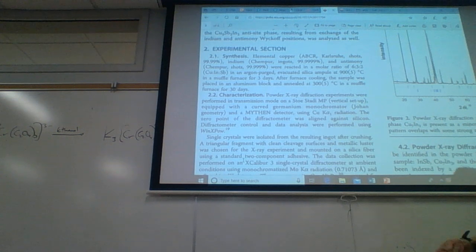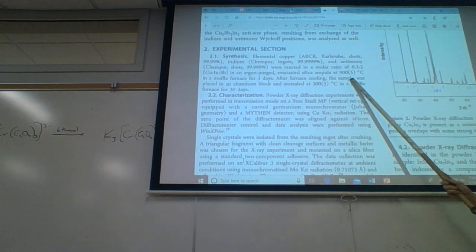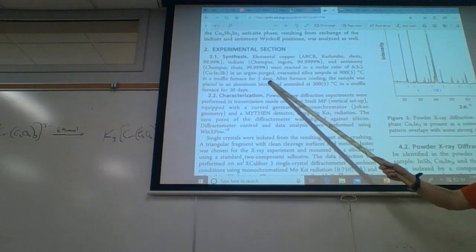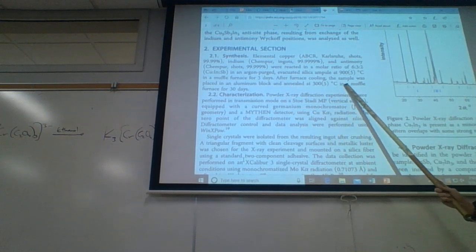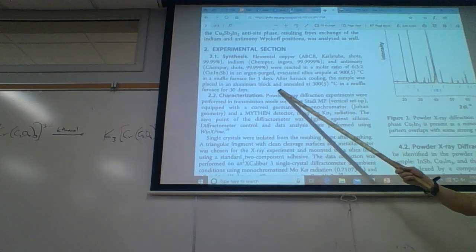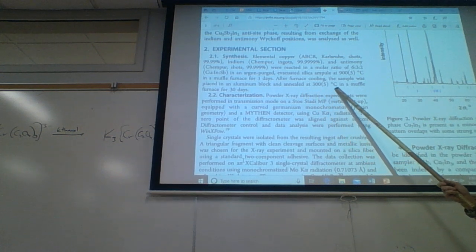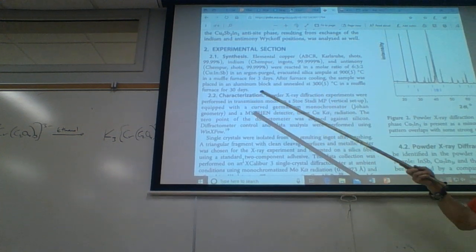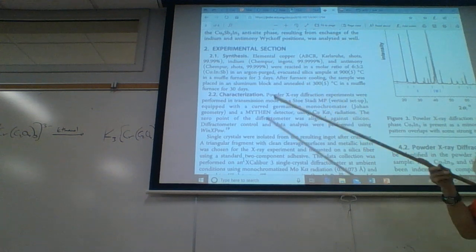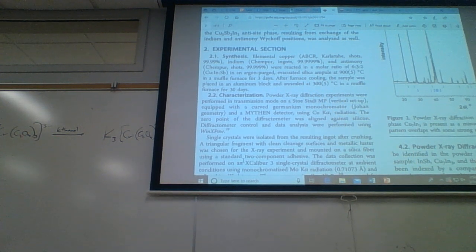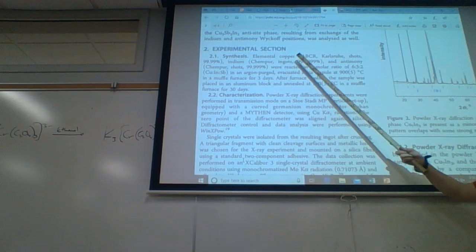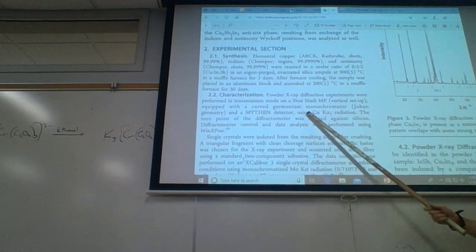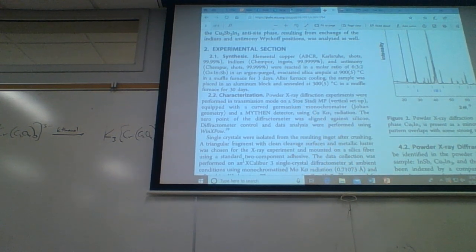For how long? Three days. After furnace cooling, the sample was placed in an aluminum block and annealed at 300 degrees C in a muffled furnace for 30 days. So they just told us how they made and processed it. The second part of this experimental section talks about characterization using X-rays, but we aren't going to be using X-rays.